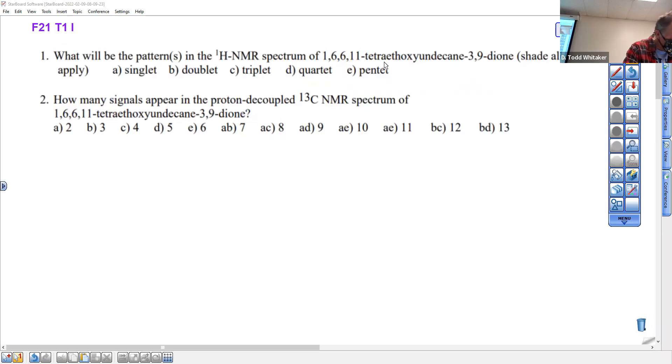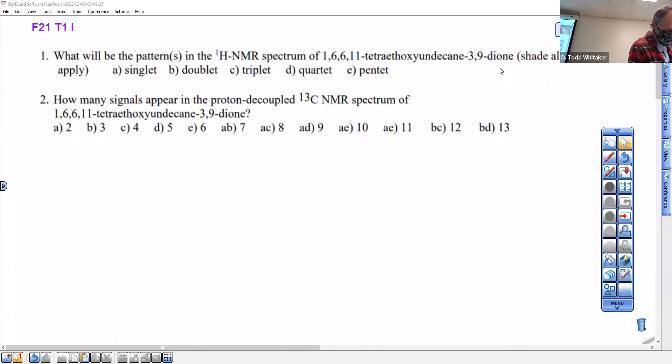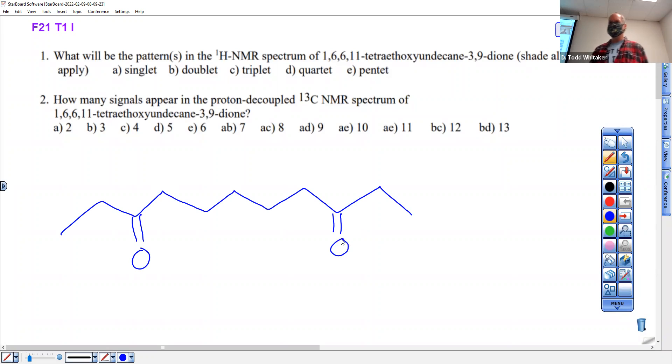We're supposed to draw tetra-asoxy-undecane-dione. It sounds complicated but it's not that bad. You draw 11 carbons, that's undecane: 2, 4, 6, 8, 10, 11. Put ketones on 3 and 9, and knowing myself, there's always elements of symmetry in the question. I'm just giving you tips that I don't have to - there'll be symmetry.